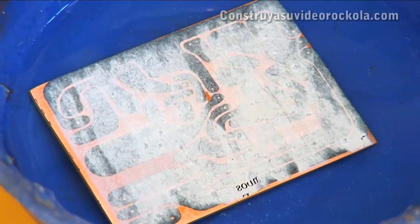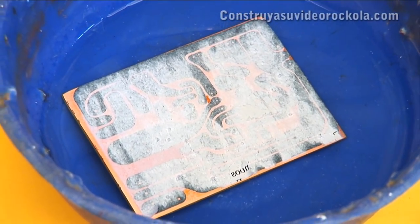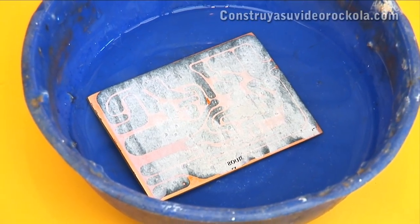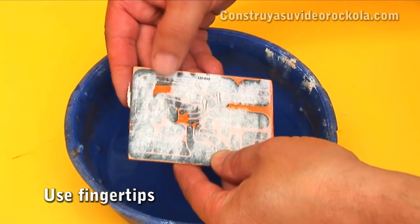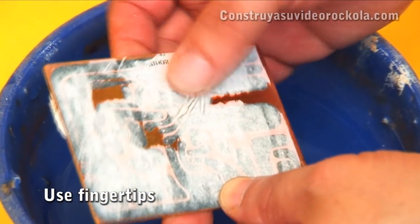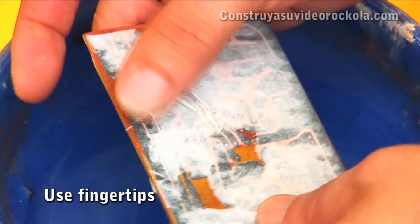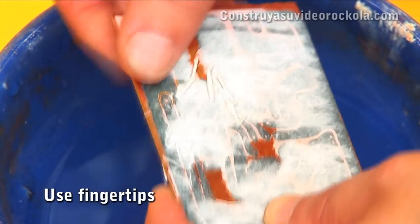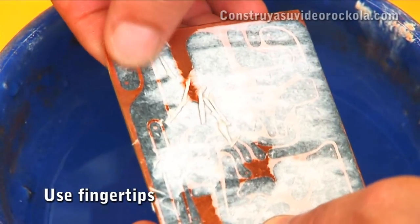If you notice that the paper cannot be removed easily, dip the board for another 5 minutes. With your fingertips, remove the paper leaving the ink adhered to the copper. Do not use nails, because they can raise and spoil the printed ink.